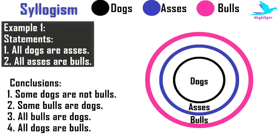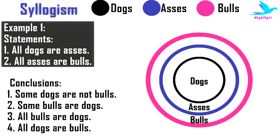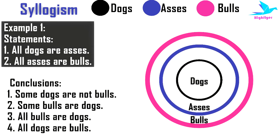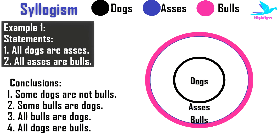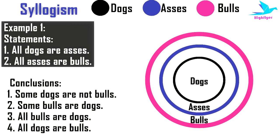On the basis of both statements, the following one diagram is possible. For this Venn diagram, let's consider the black circle represents dogs, the blue circle represents asses, and the magenta circle represents bulls. Here all dogs are asses and all asses are bulls. Now let's check each conclusion one by one. Conclusion 1 says: Some dogs are not bulls. But as we can see, dogs come under the bigger circle bulls, so all dogs are bulls. So the statement 'Some dogs are not bulls' is false.